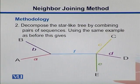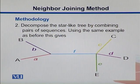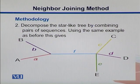What we do next is decompose this star-like tree by combining pairs of sequences. We can have B and A on one side together. On the other side, we might have C and D combined or D and E combined. In this way, we can come up with clusters or groups on both sides.